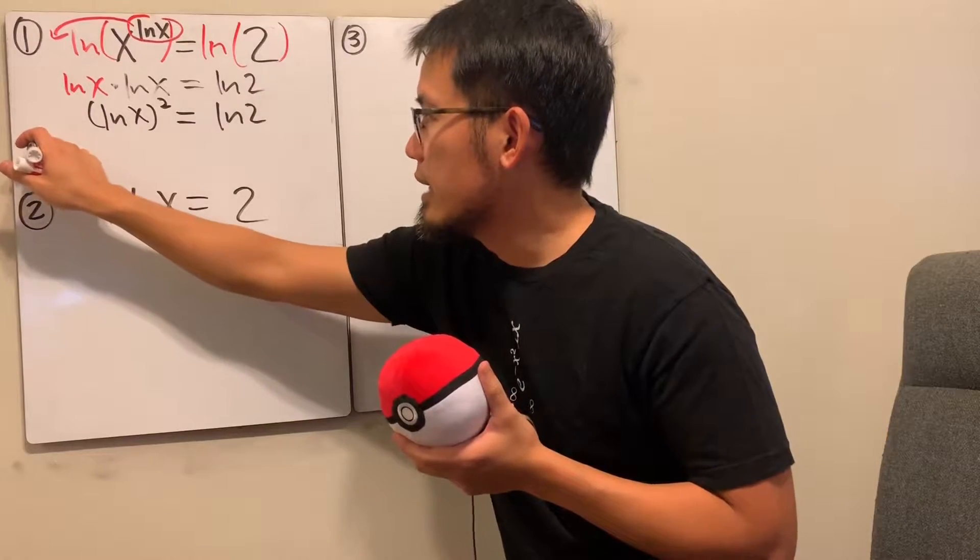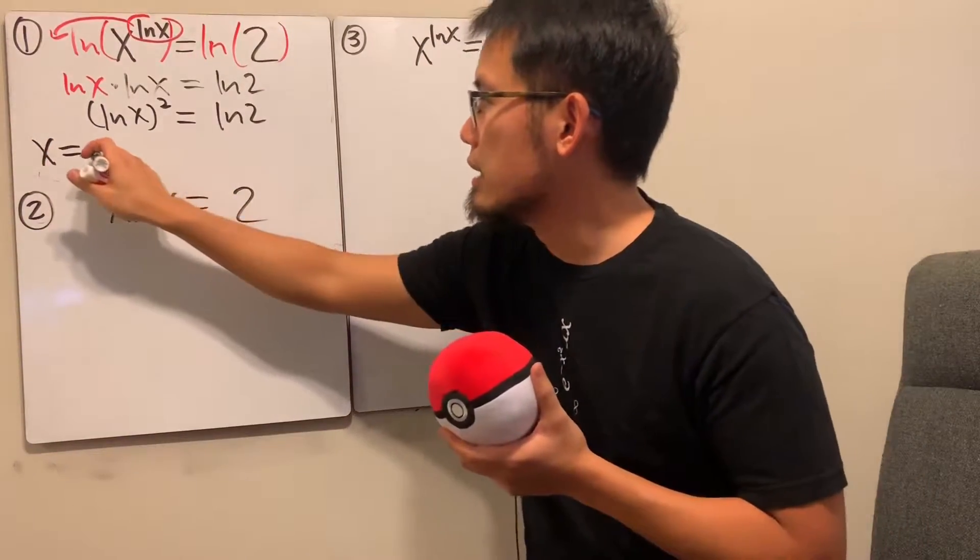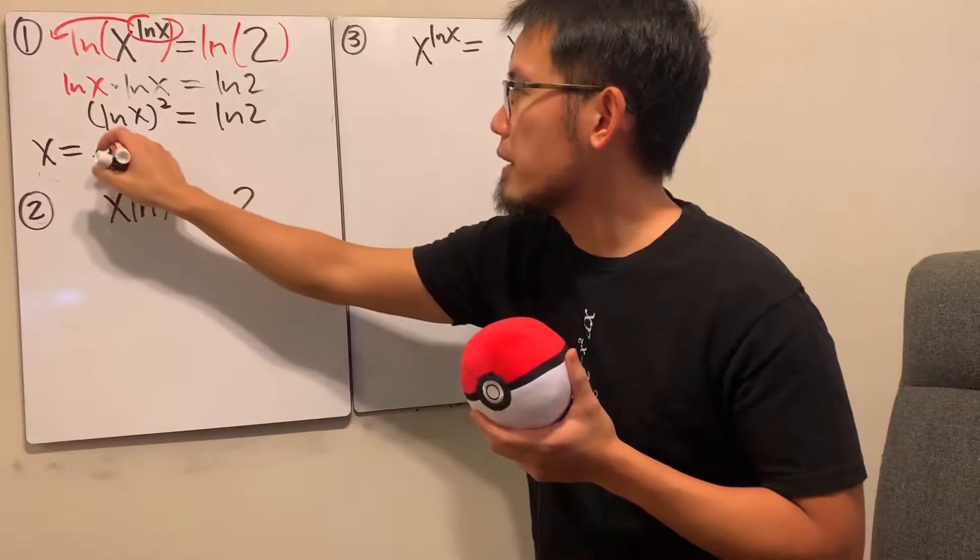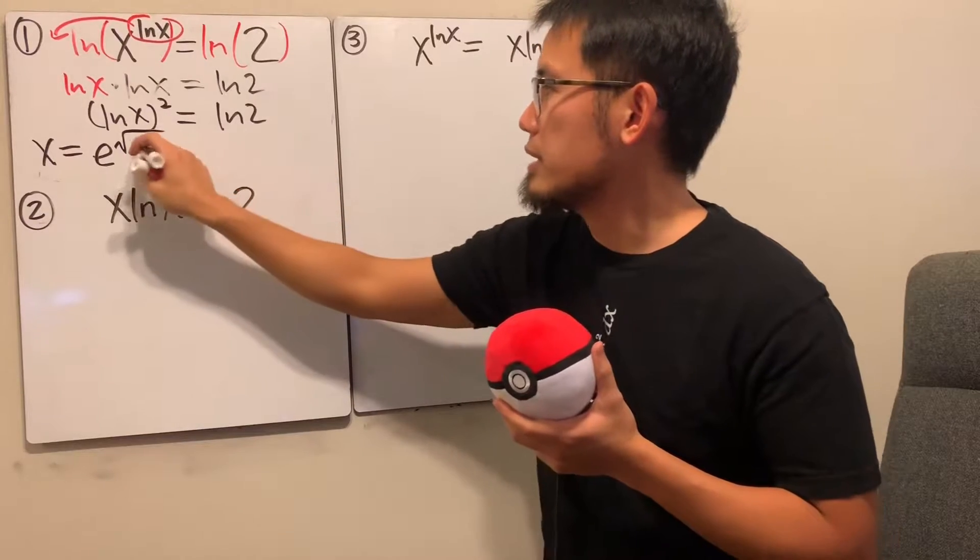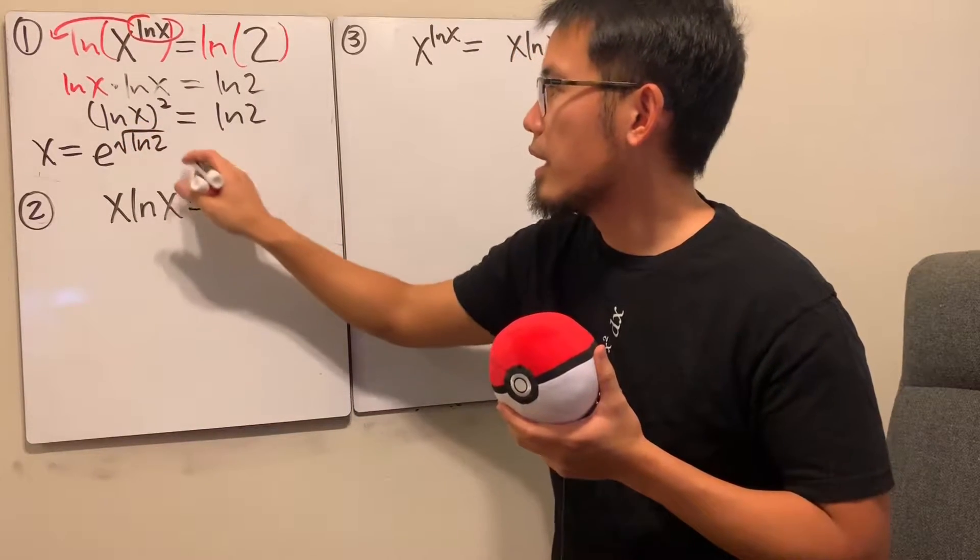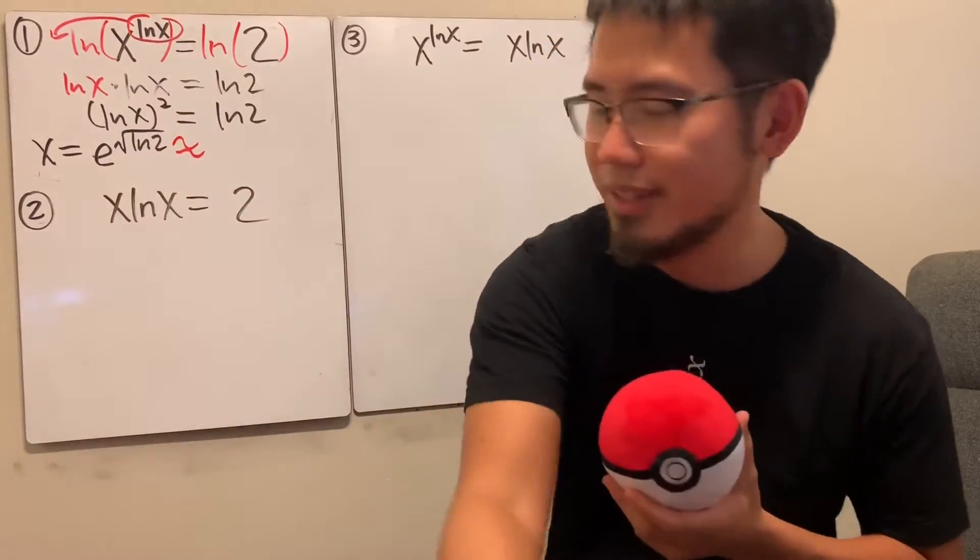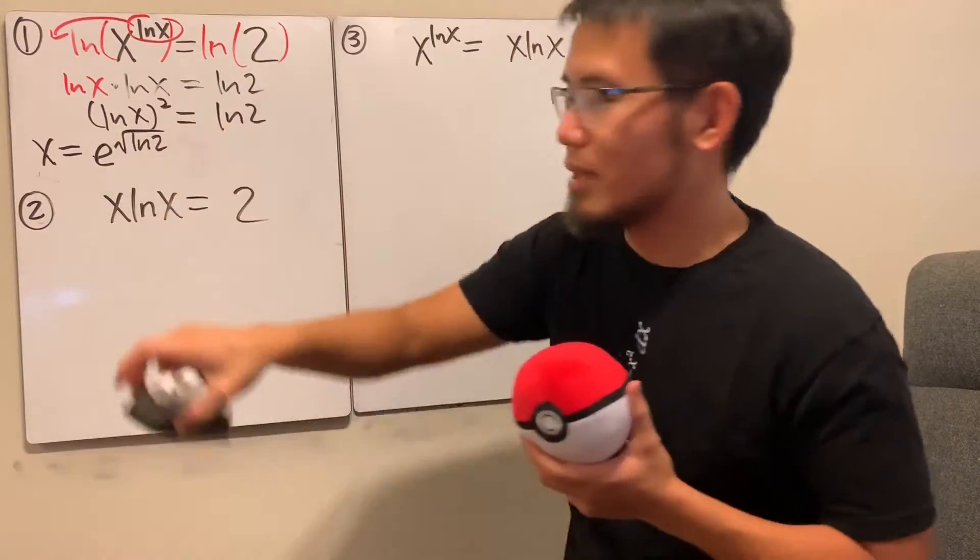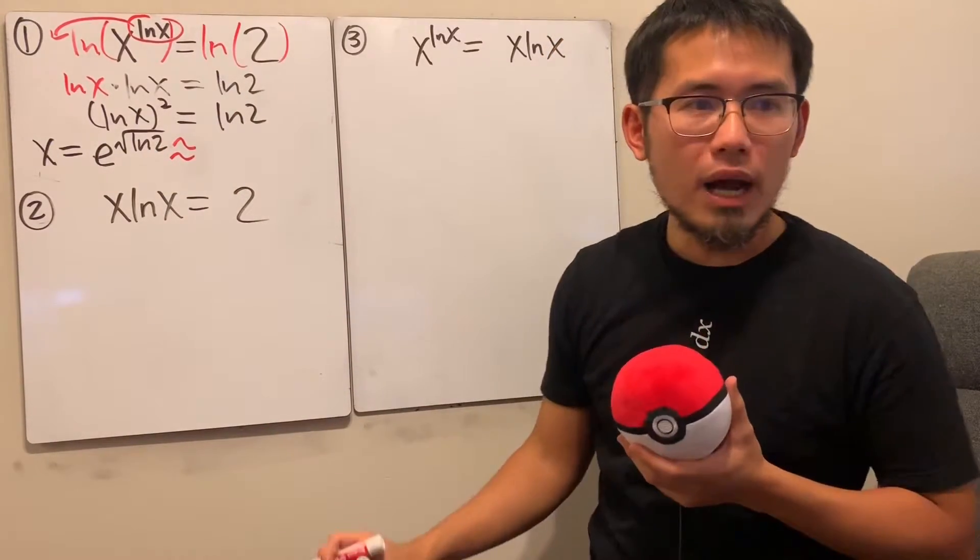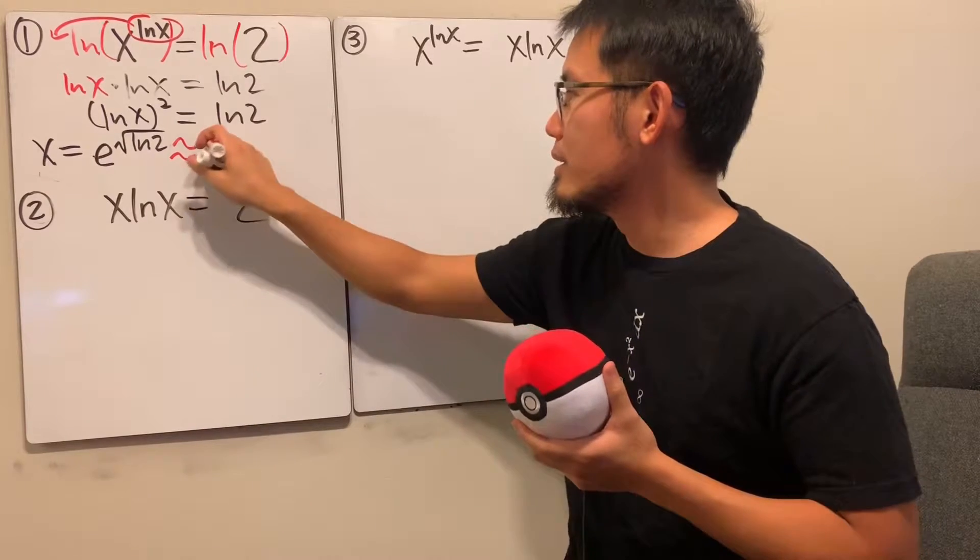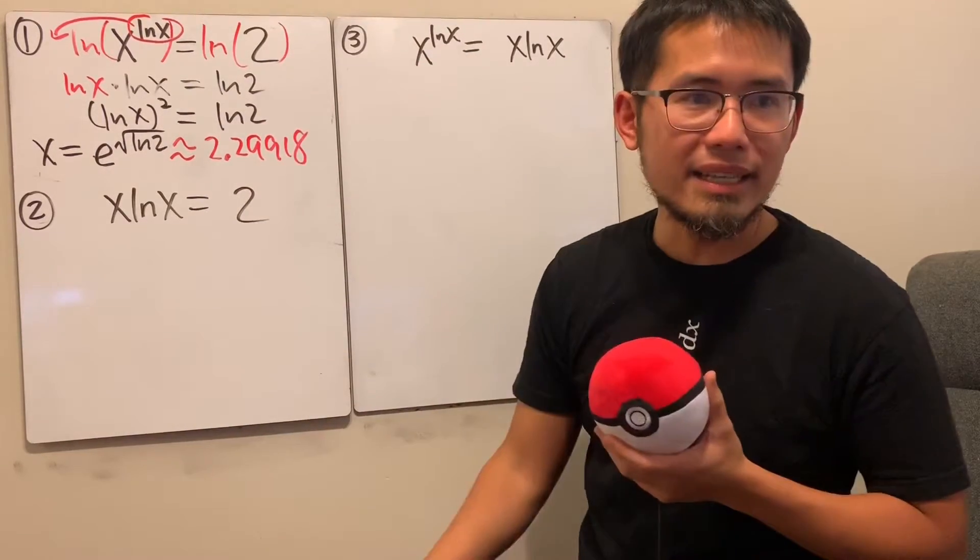And then you can just do e to the power on both sides. In the end, you will get x is equal to, the first answer is e to the power of positive, but again, you have to do the square root. And you put this inside, which is natural log of 2. And if you use a calculator, I will tell you, that's a really bad approximation, I'm sorry. If you use a calculator, I will tell you, this is approximately 2.29918, like that.